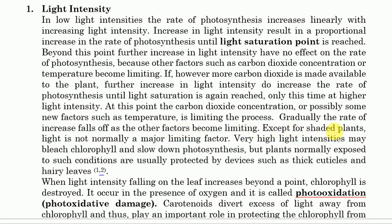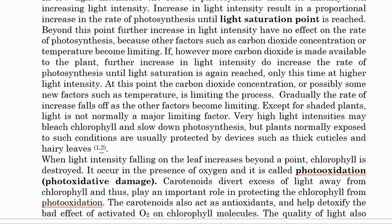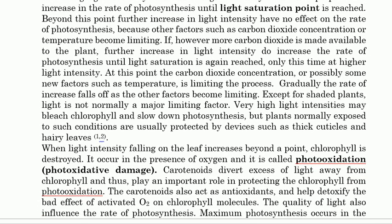Except for shaded plants, light is not normally a major limiting factor. Very high light intensity may bleach the chlorophyll and slow down photosynthesis, but plants normally exposed to such conditions are protected by devices such as thick cuticles and hairy leaves. When light intensity on the leaves increases beyond a certain point, chlorophyll is destroyed — this occurs in the presence of oxygen.